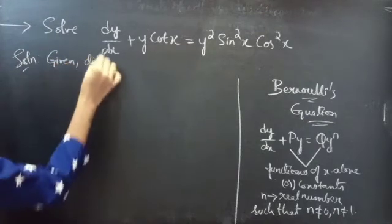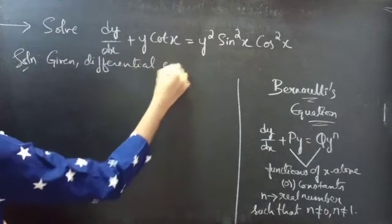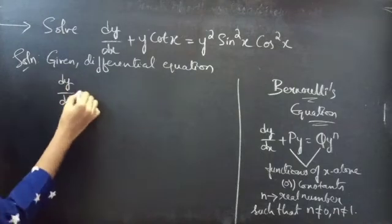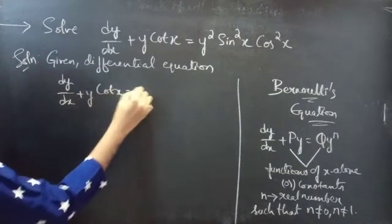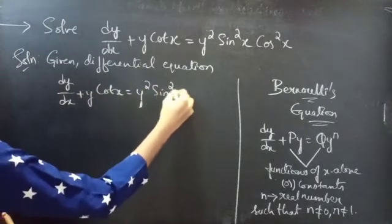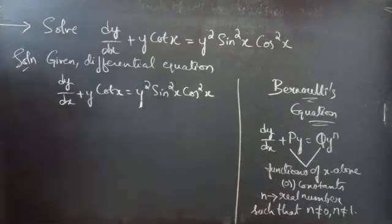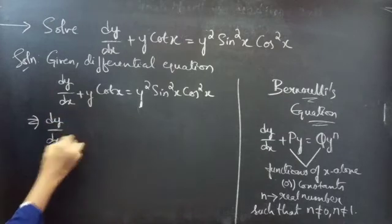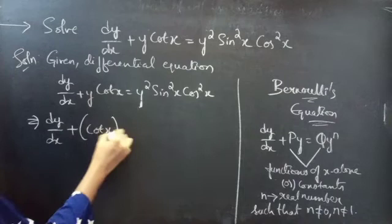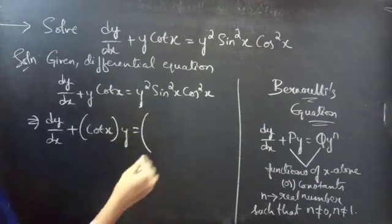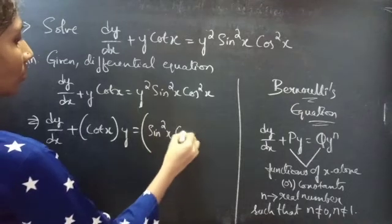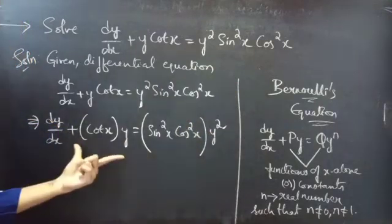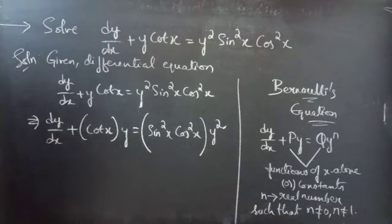Given differential equation: dy/dx plus cot(x)·y equals sin²(x)·cos²(x) — a function of x into function of y — which is Bernoulli's equation in y and x.